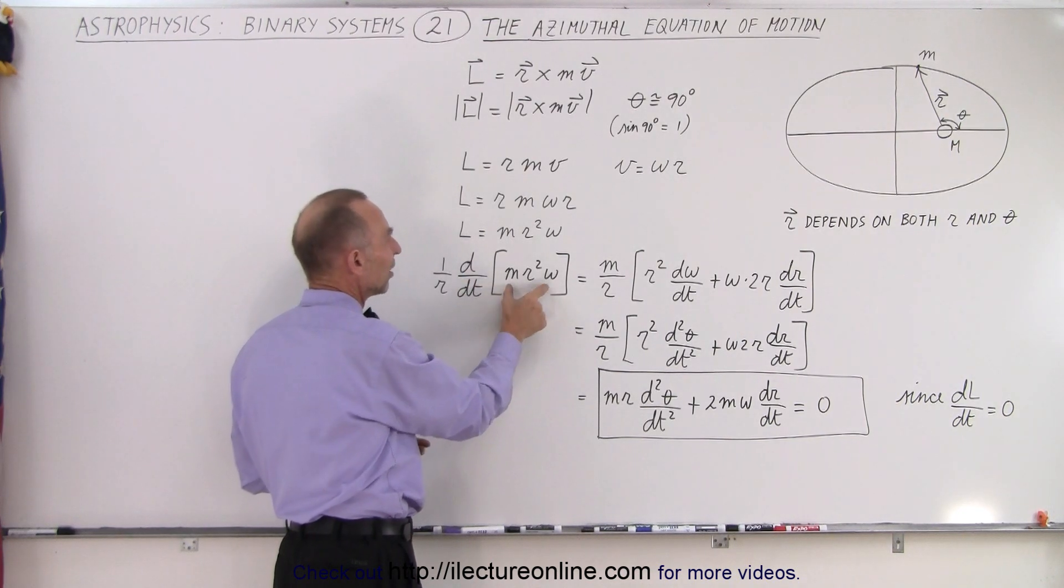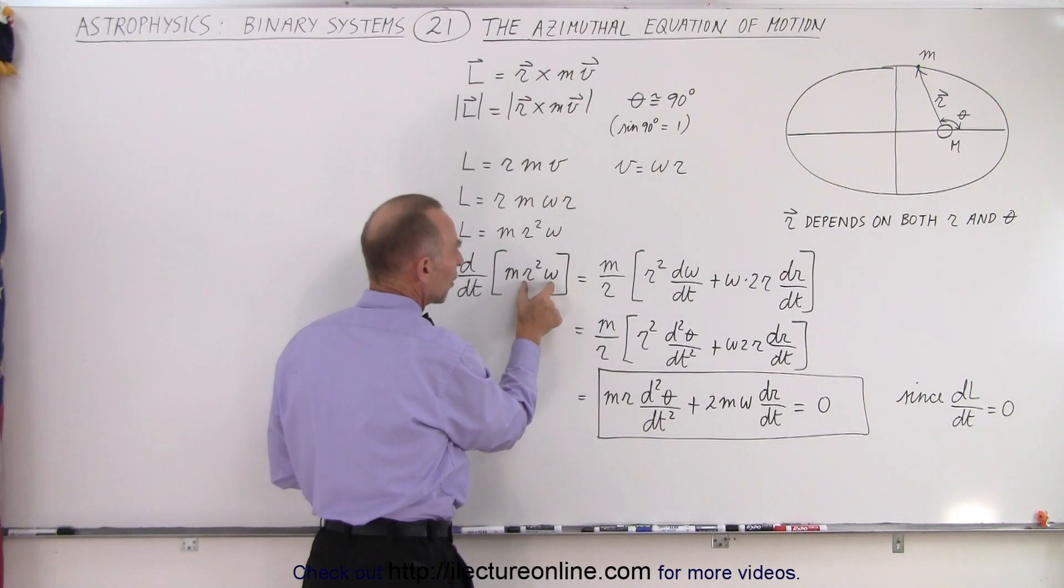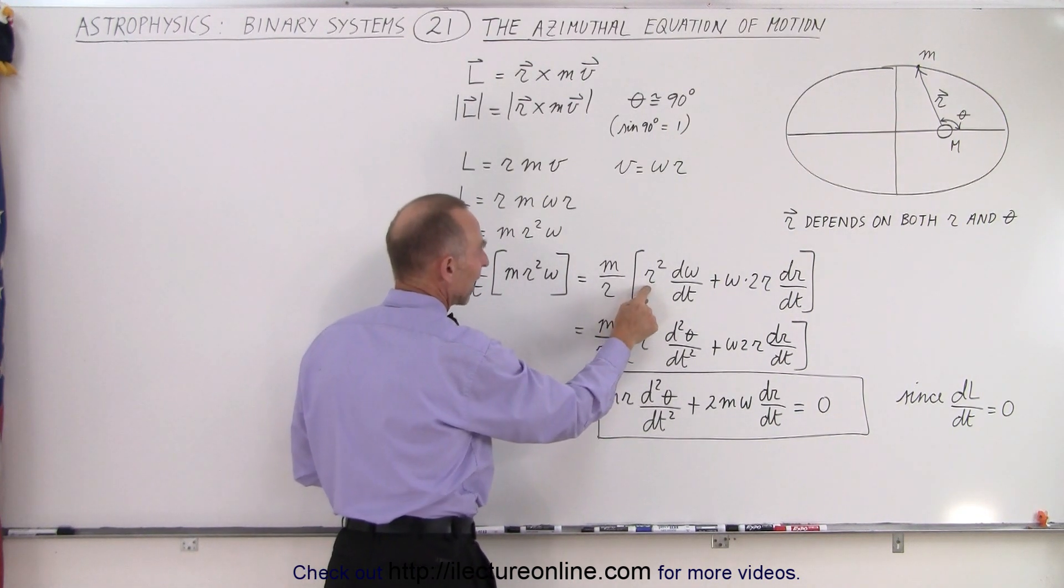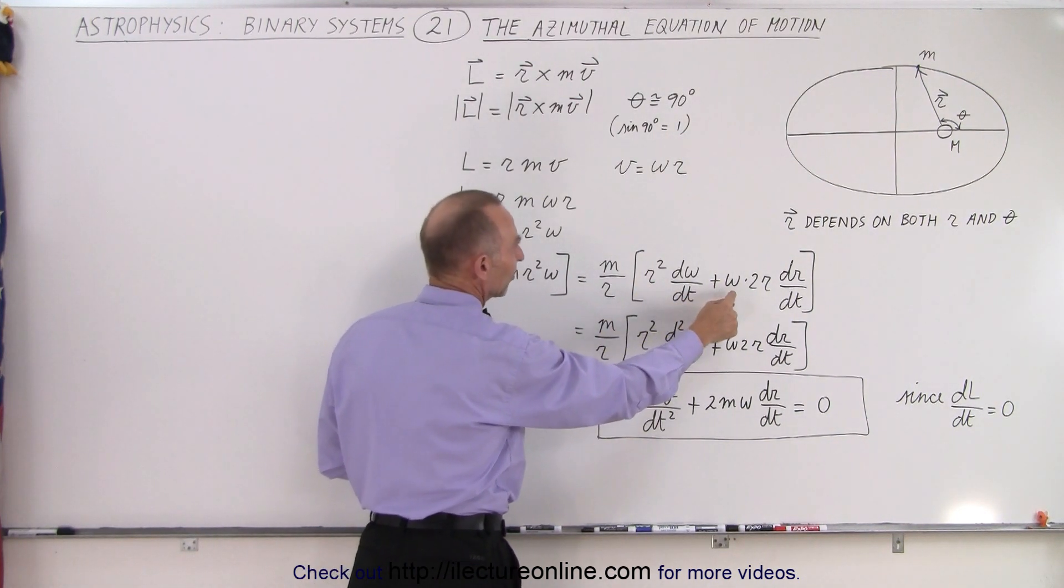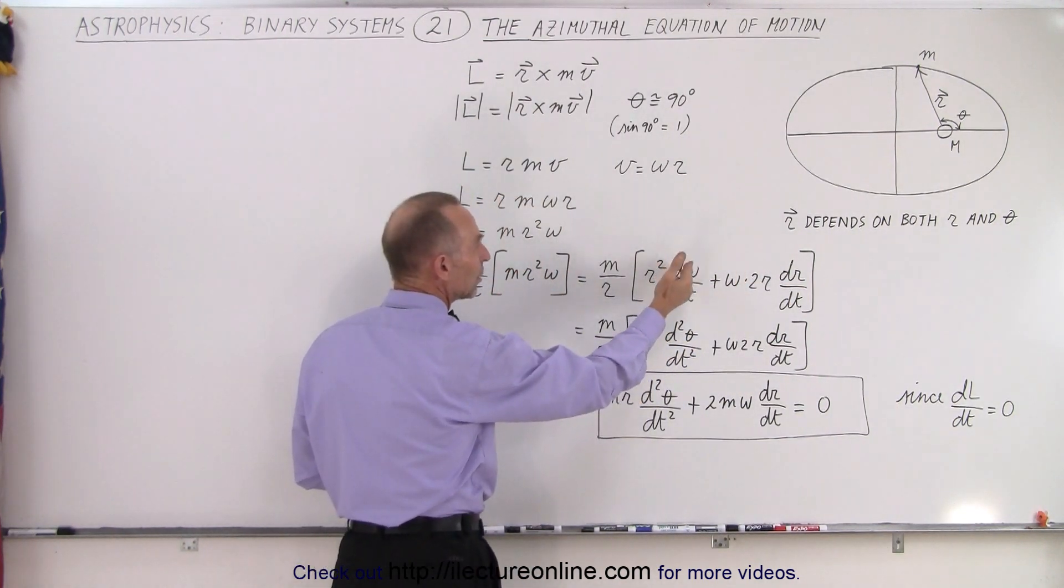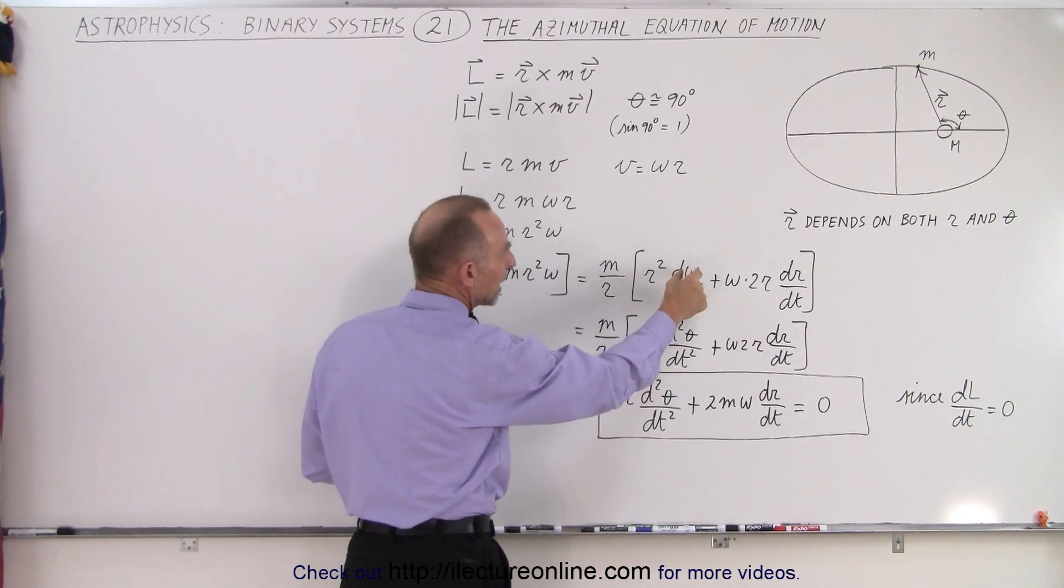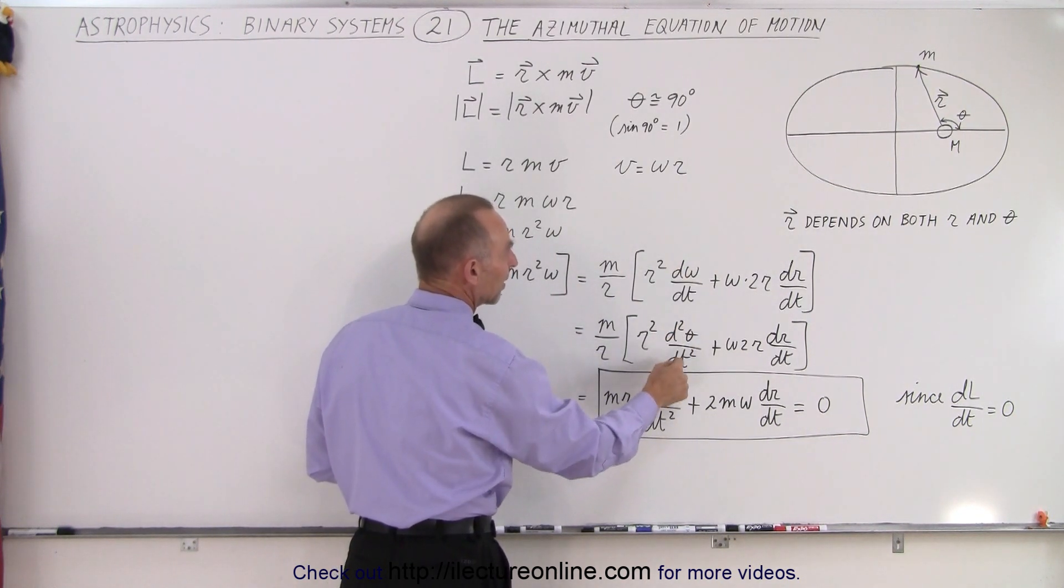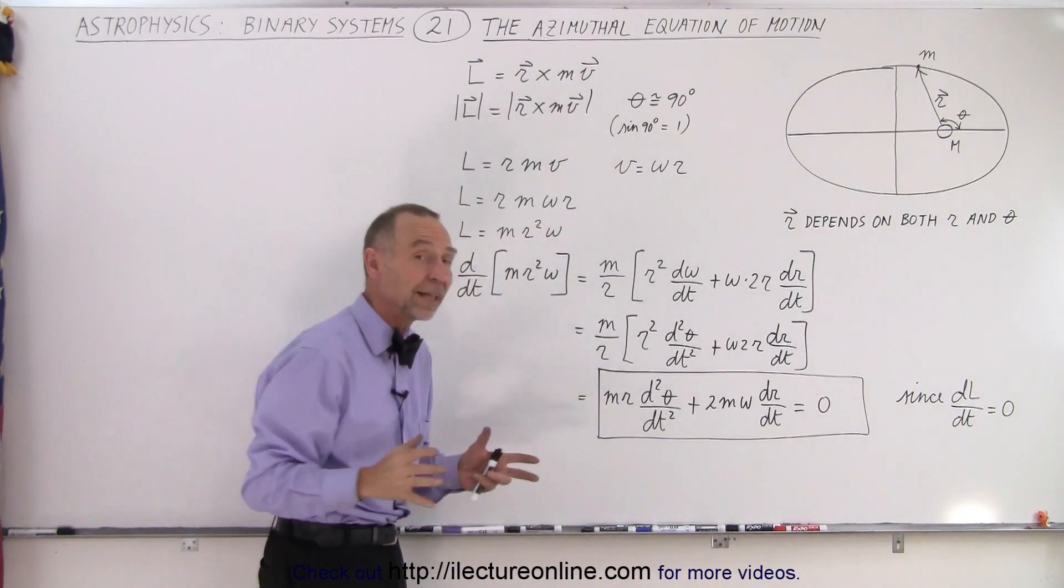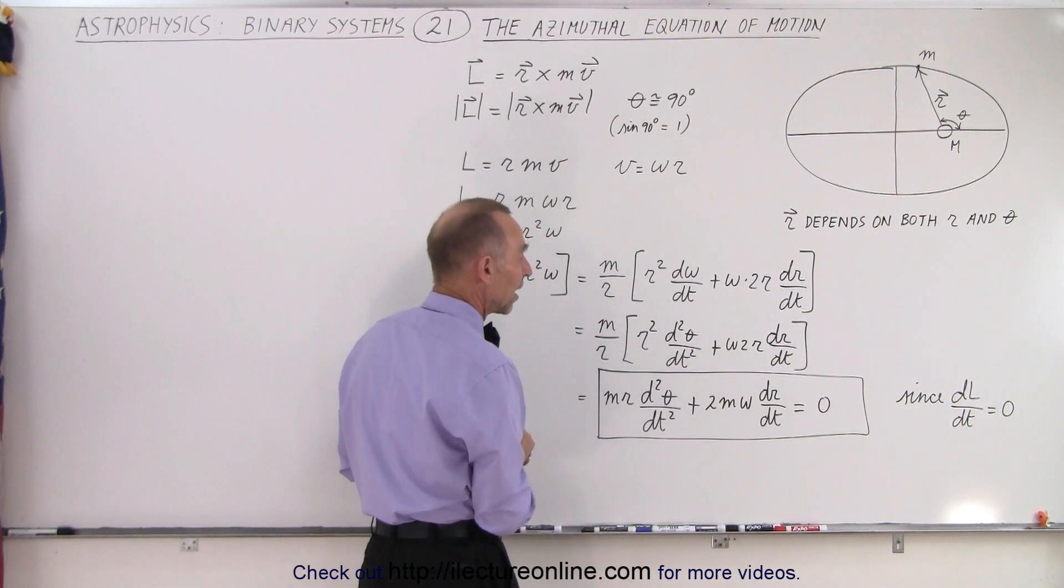So we take d/dt of this right here. Now M is a constant so we can move that out, and then we have a product, so we take the first times the derivative of the second plus the second times the derivative of the first. We can write Omega as the derivative of theta with respect to time, and then we take the second derivative of that, so we end up with the second derivative of theta with respect to time.